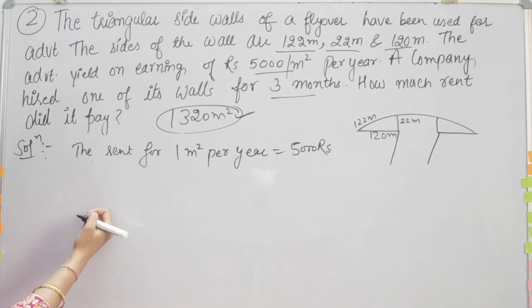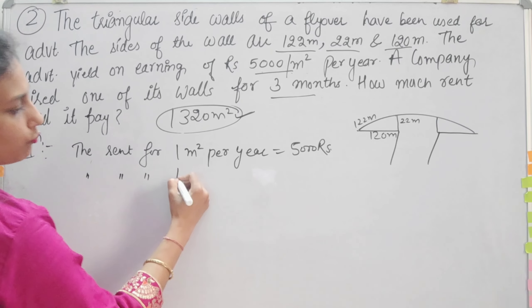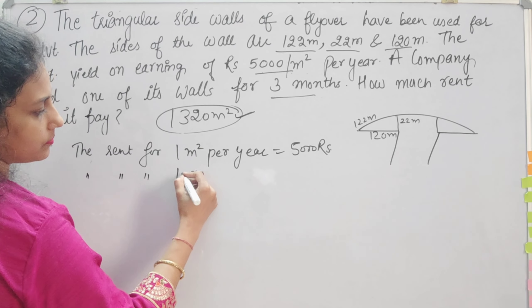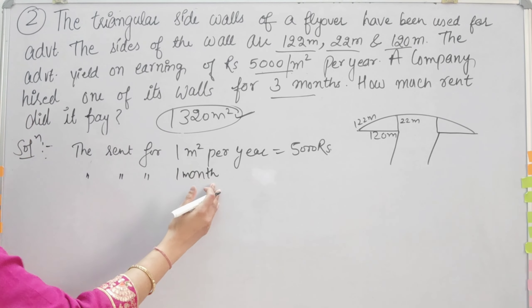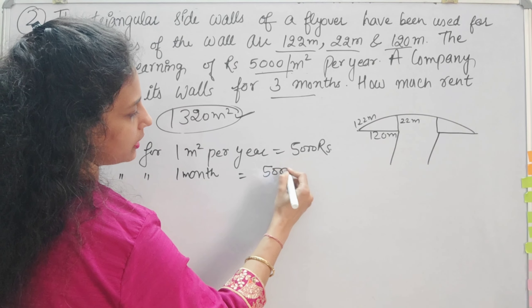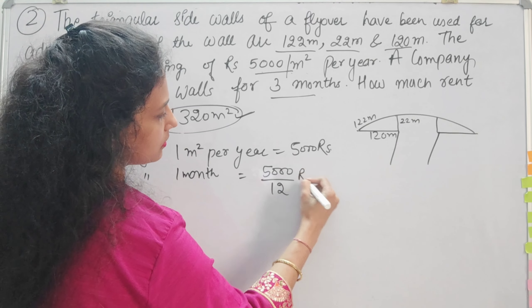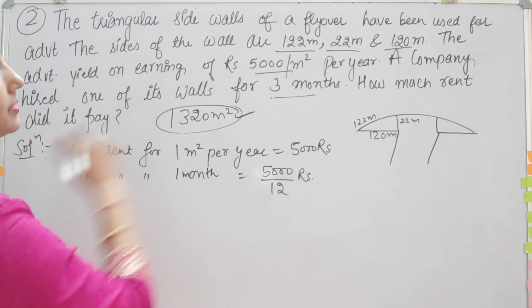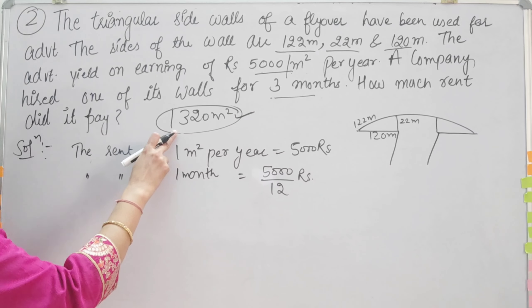But if we want to calculate for one month, the rent per month is equal to 5,000 divided by 12 rupees. We have to calculate for 3 months for this area.